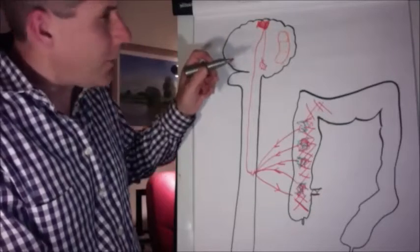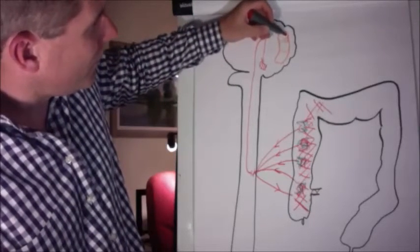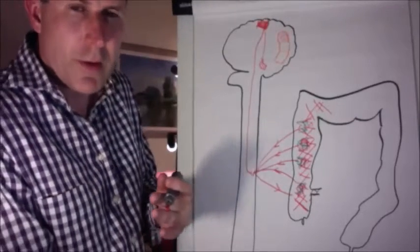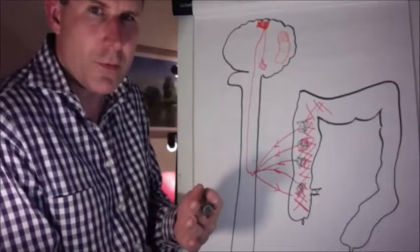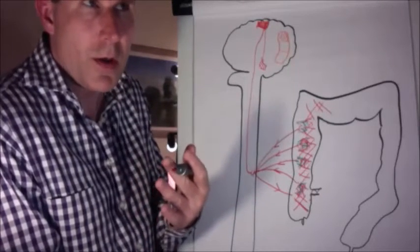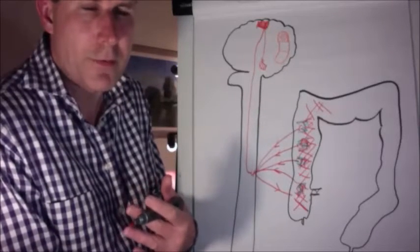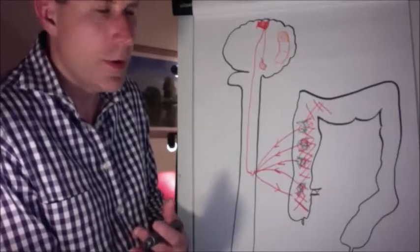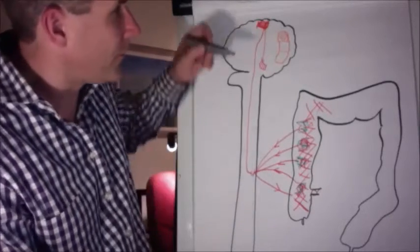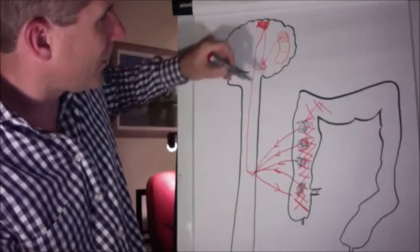Now there are other areas of the brain that also feed into that. Most of us recognize that stress and emotion has an influence on the way our guts behave. So if you're in a stressful environment, many of us complain of butterflies, some of us complain of diarrhea, some of us constipation, and that varies from individual to individual, but most of us recognize that has an effect. So that has an effect on what goes to the guts.